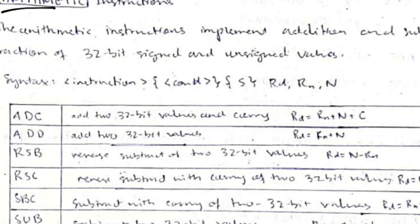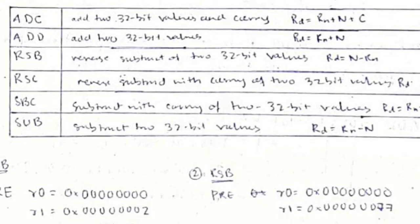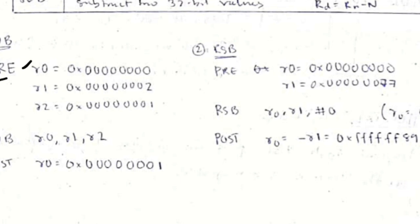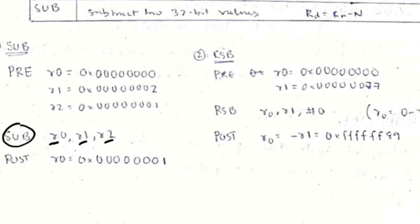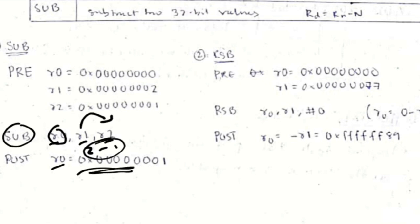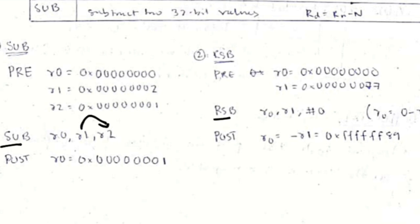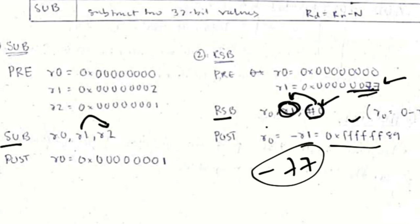Arithmetic instructions include two codes for addition and four for subtraction. Subtraction has two types: normal subtraction and reverse subtraction (RSB). For normal SUB, if r0=0, r1=2, r2=1, then SUB r0, r1, r2 computes r1 − r2 = 2 − 1 = 1 and stores it in r0. For RSB, the operand order is reversed — it computes r2 − r1 instead.